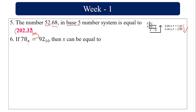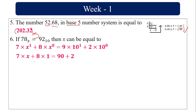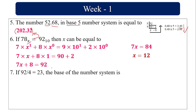If 78 base X equals 92 base 10, then X can be equal to? Similar to the previous problem: 7×X¹ + 8×X⁰ = 9×10¹ + 2×10⁰. So 7X + 8 = 92, giving 7X = 84, and X equals 12. The base X value is 12.